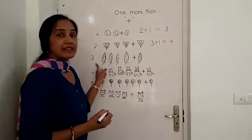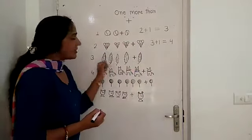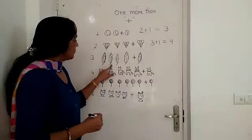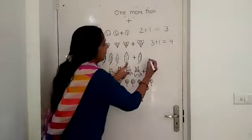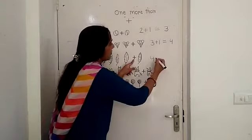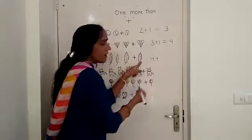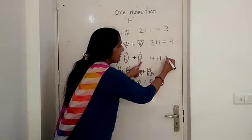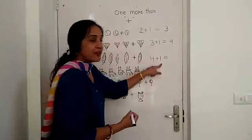And these are leaves. How many are here? One, two, three, four. Four plus I got one more, one. Equals four plus one, five.